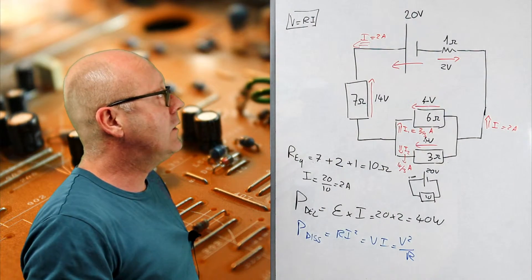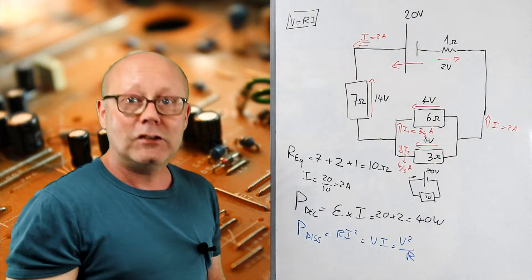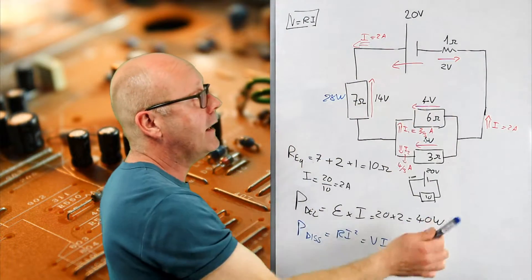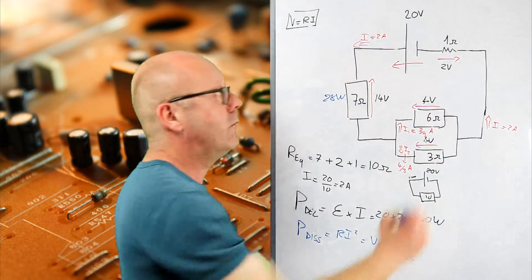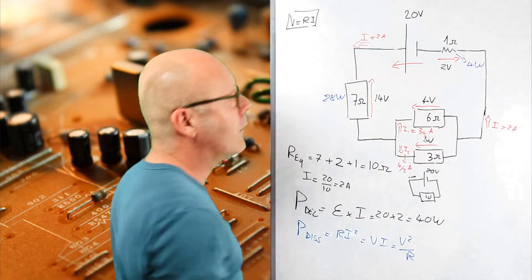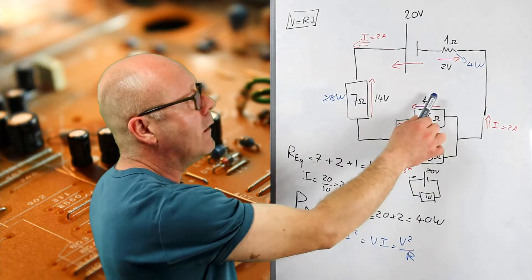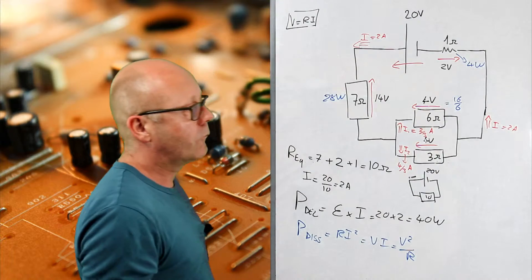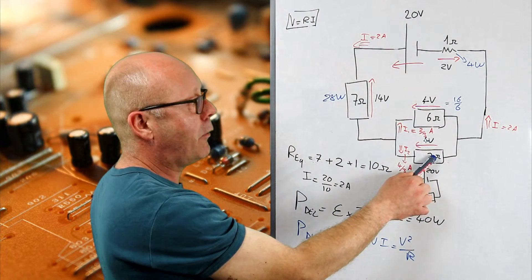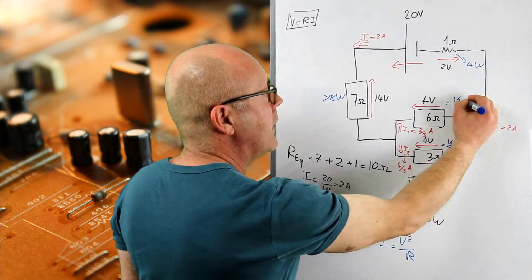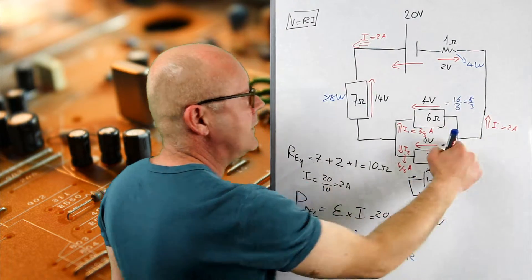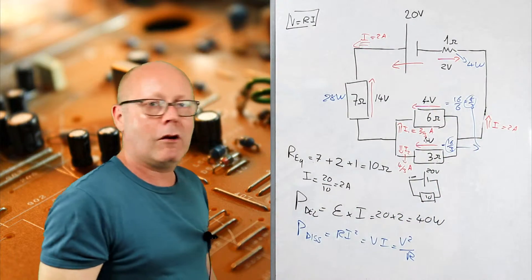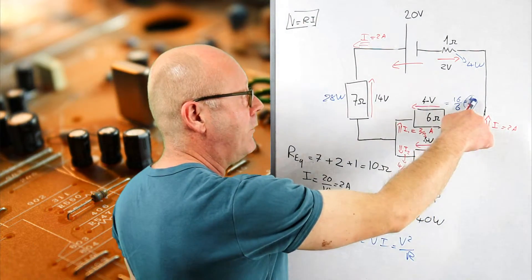For instance here, I find it more easy to calculate 14 by 2, so 14 by 2 gives me 28 watts which are dissipated by this resistor. I'll do the same here, 2 multiplied by 2, 4 watts. Here I find it maybe easier to calculate 4 squared divided by 6, giving me 16 divided by 6. Here I've got 4 squared divided by 3, so 16 divided by 3. So that's actually 8 thirds here and 16 thirds here. If I sum them, I know that this system of two resistors in parallel will give me 16 plus 8, 24 divided by 3, 8 watts.